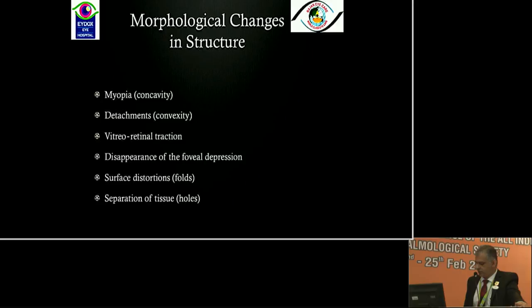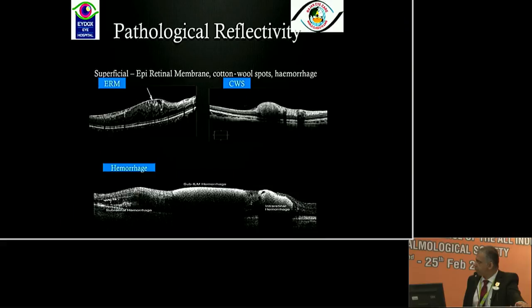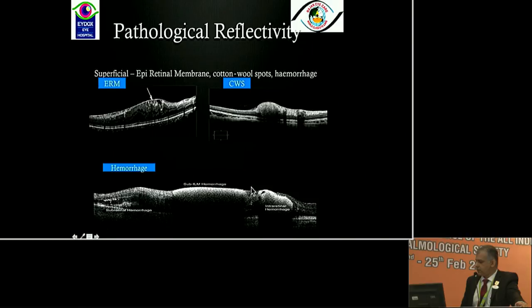Sometimes morphological changes play a quite significant role. This is the OCT classification of different layers — how to interpret reflectivity of different structures. Color coding is always pseudo-color, so we don't give too much importance to that. However, sometimes there is pathological reflectivity — like in this picture there is an ERM and a cotton wool spot which mimics a hemorrhage, so clinical correlation is needed. Hemorrhage, if present, is most commonly a sub-ILM hemorrhage rather than sub-hyaloid, so treatment changes considerably.